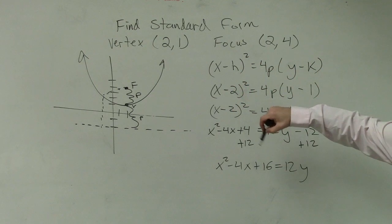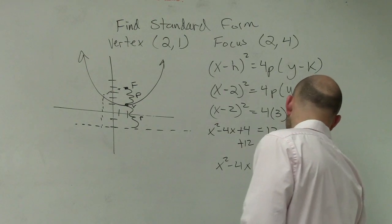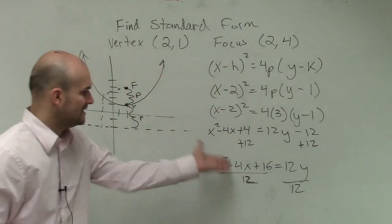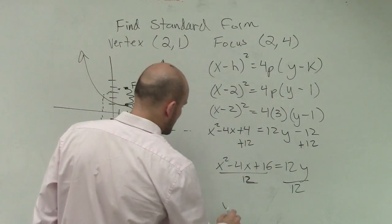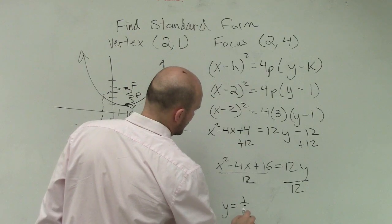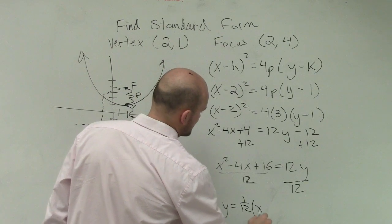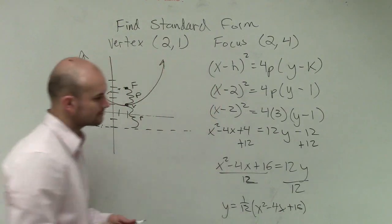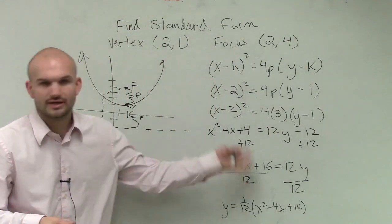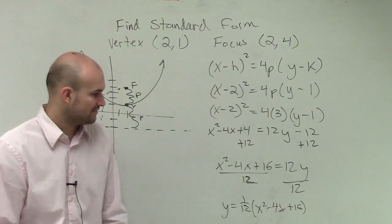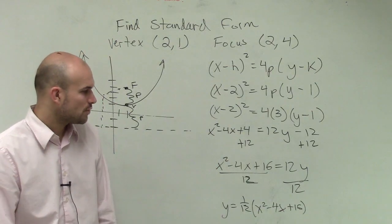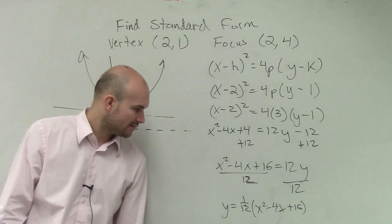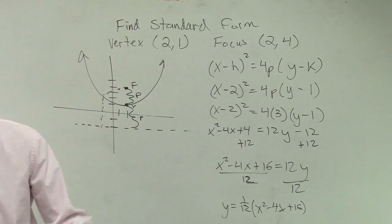Then you want to get the y by itself, right? So we divide by 12. And rather than having each one of these terms divide by 12, we could just say it's going to be y = 1/12(x² - 4x + 16). Or you could have every term simplified by dividing by 12 and leave them as fractions. So you'd have 1/12 x² - 1/3 x + 4/3. You could do it that way as well.